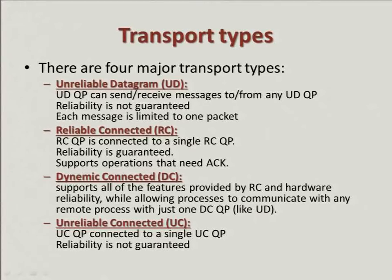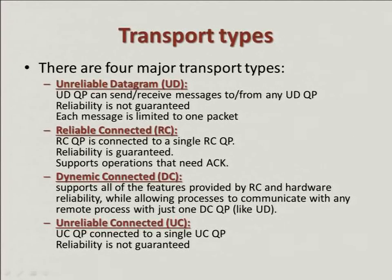The last transport type is UC — unreliable connected. A UC QP is connected to a single UC QP and reliability is not guaranteed. In this lecture I'll focus more on RC QP and mention UD QP a little bit. When we're talking about RC QP, which is connected to one QP, I keep the address handler — all the path information about the remote node — on the QP context. While with UD QP, which can connect each time to a different QP, I keep this address handler on a certain task.